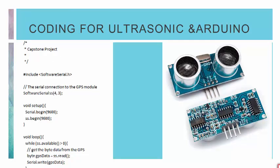This is the coding for the ultrasonic sensor and Arduino. The serial connection to the GPS module uses software serial on pins SS4 and 3, and byte data is retrieved from the GPS.